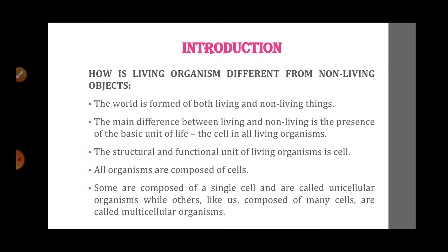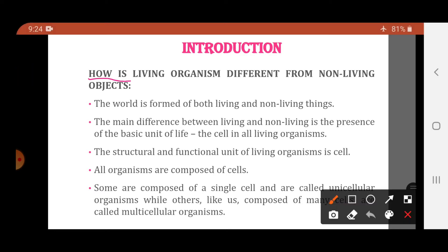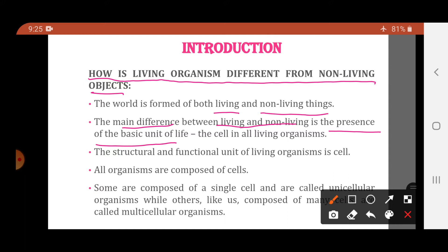What is the thing through which we can differentiate a living organism from a non-living object? The world consists of both living and non-living things. The main difference between living and non-living is the presence of the basic unit of life — the cell — in all living organisms. Through the presence of cells, we can differentiate a living object from a non-living object.